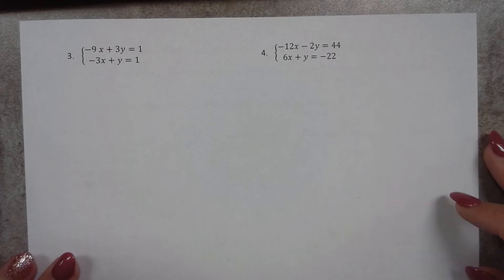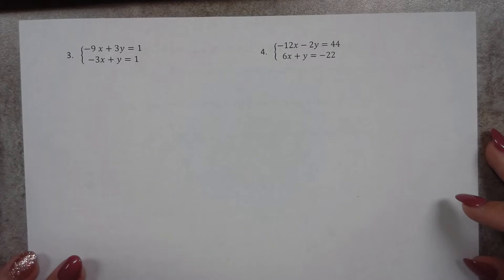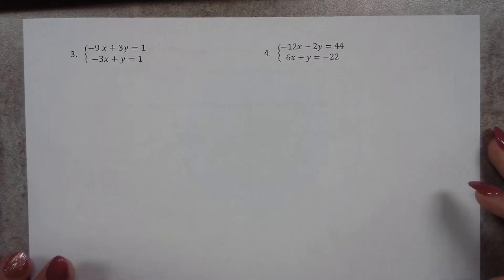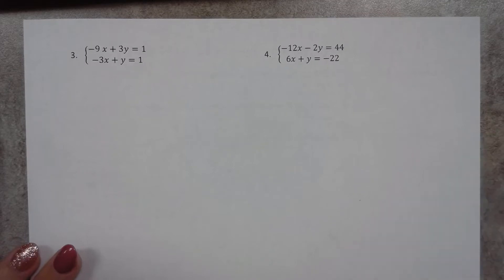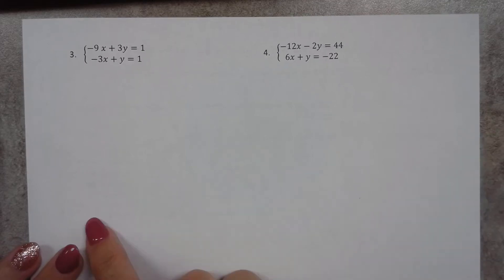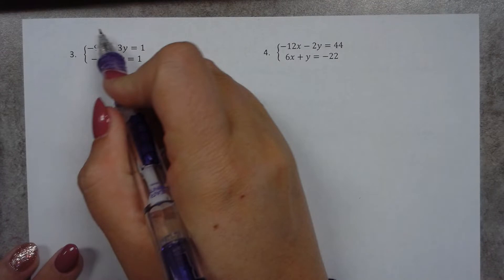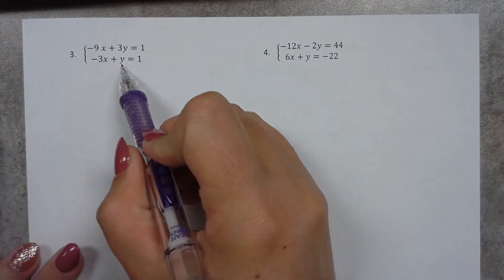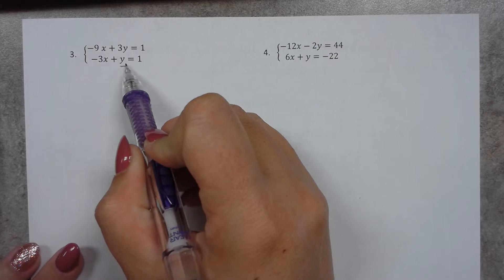All right, so we just have two more problems left in our notes for outcome three, component three, part one. Remember that we're doing the substitution method here. So if I want to solve this using substitution, I need it to either be x equals or y equals. If we look here, this y is going to be real easy to get by itself. So I'm going to get this y by itself.